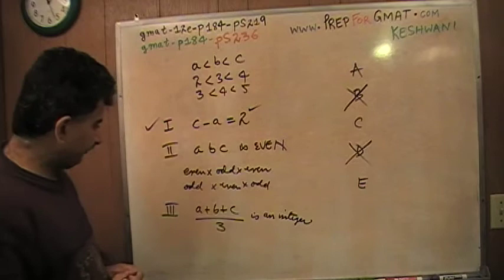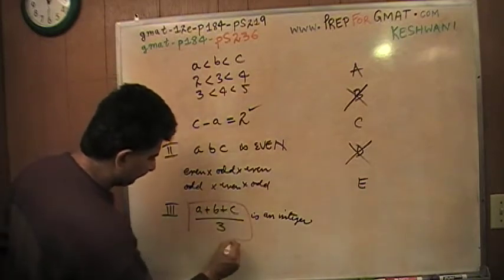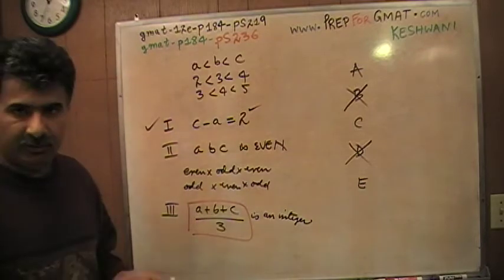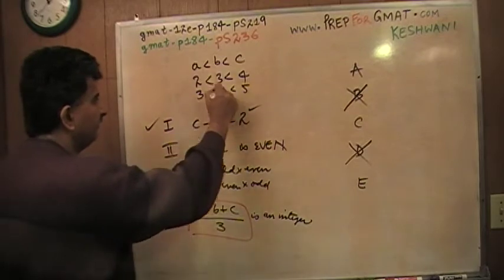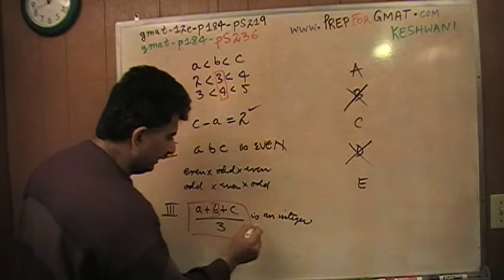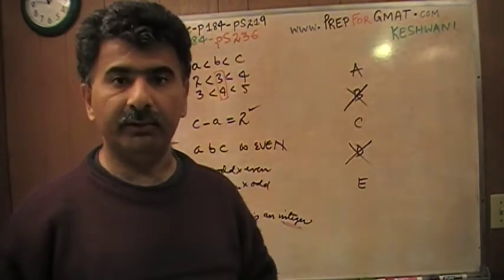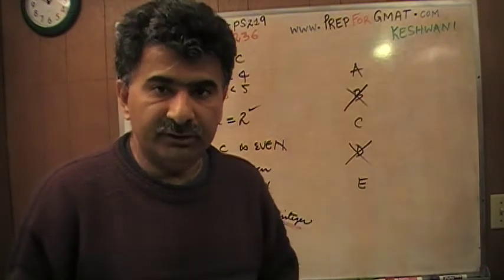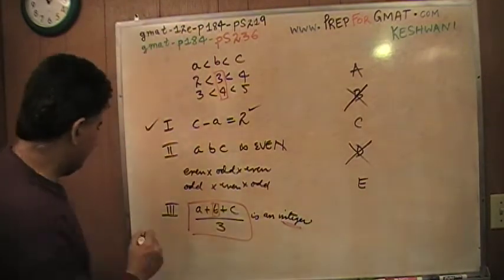They're telling me that A plus B plus C divided by 3 has to be an integer. Of course it's going to be an integer because this quantity here, the sum of A and B and C divided by 3 is simply the average of the three numbers. And the average of the three numbers, since they are three consecutive numbers, is going to be the middle number, B. So the question is, is B an integer? Of course it's an integer because they are all integers because that's what we started out with. Statement number 3 is true.